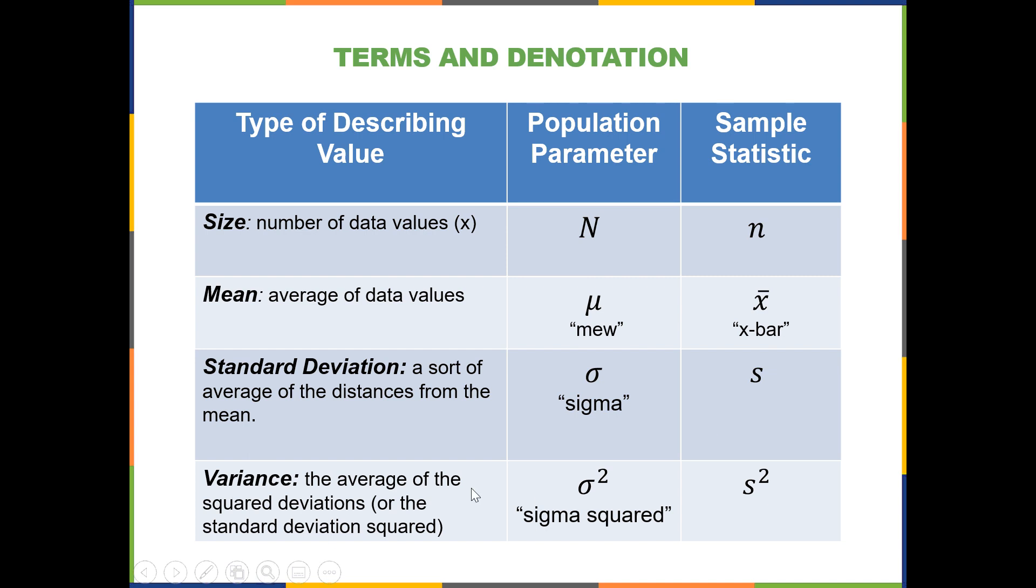The variance is sigma squared, which means that you can literally take sigma, raise it to the power of two, and then you have the variance. Or it works the other way around. If you have the variance, you can take the square root to get back to the standard deviation. And for the sample variance, we have s squared.